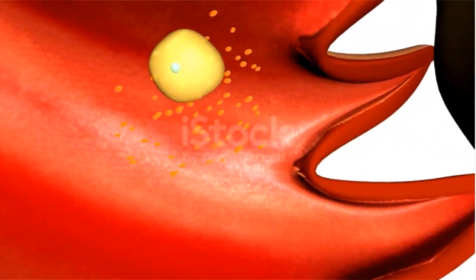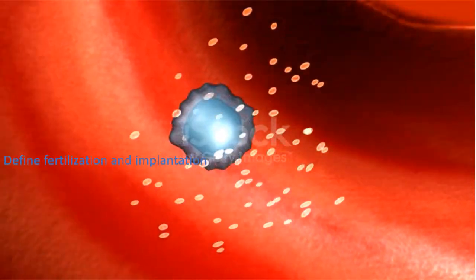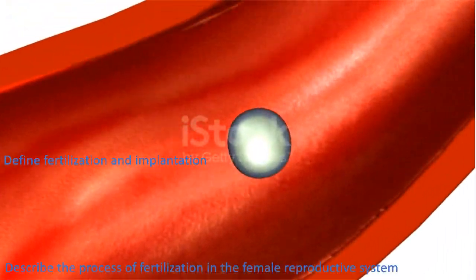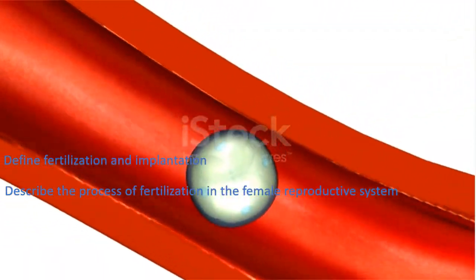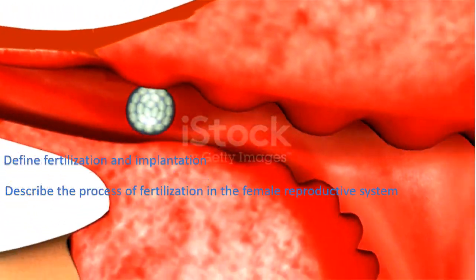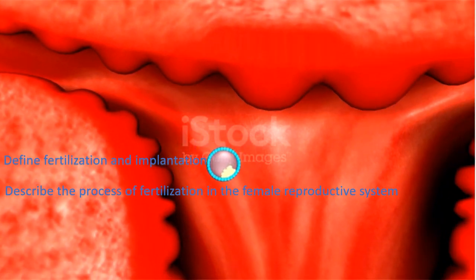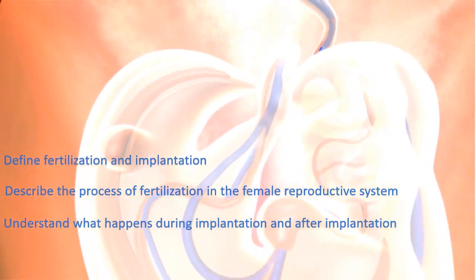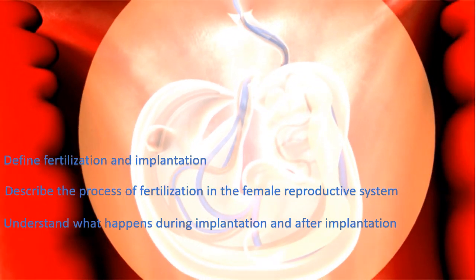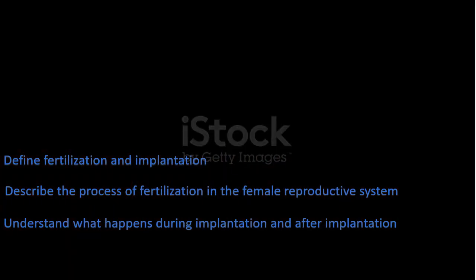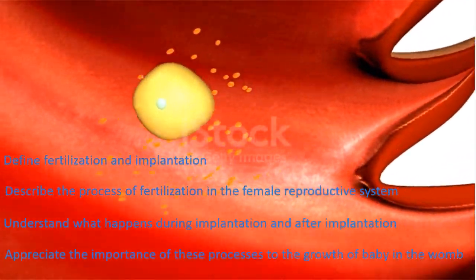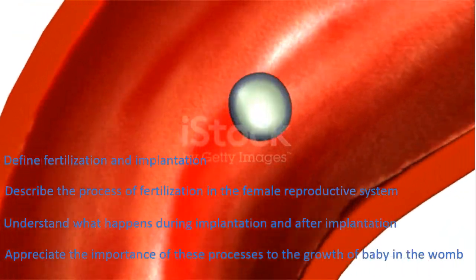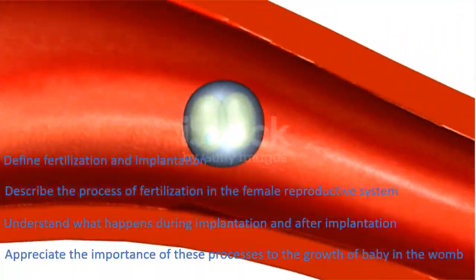By the end of this lesson, you should be able to define fertilization and implantation, describe the process of fertilization in the female reproductive system, understand what happens during and after implantation, and appreciate the importance of these processes to the growth of a baby in the womb.